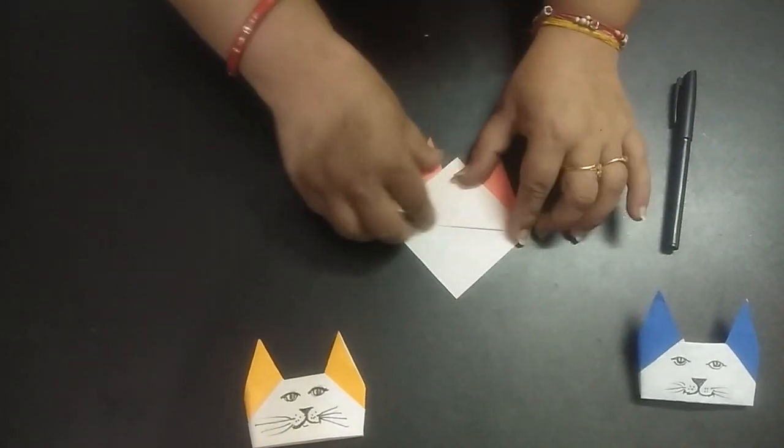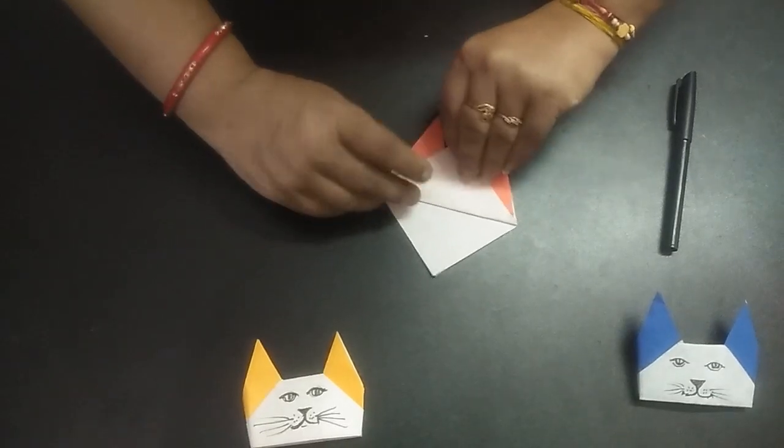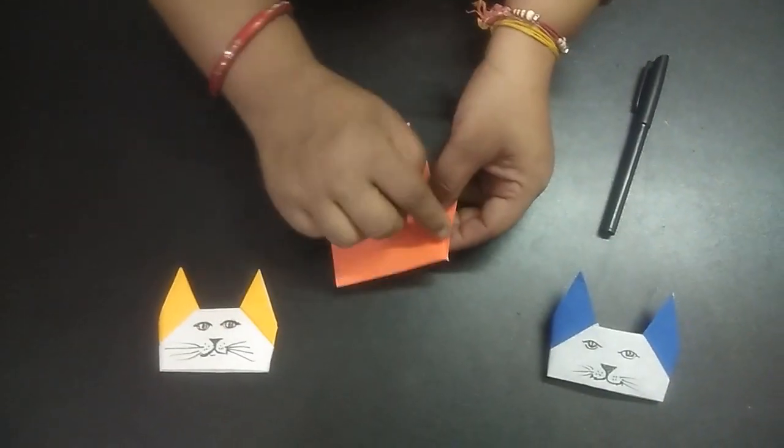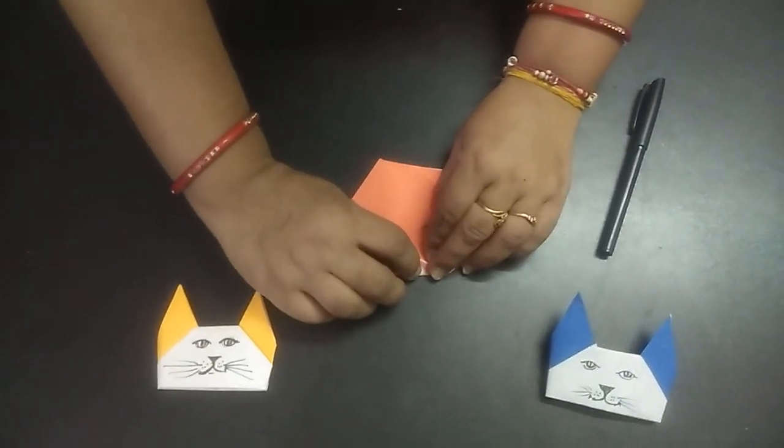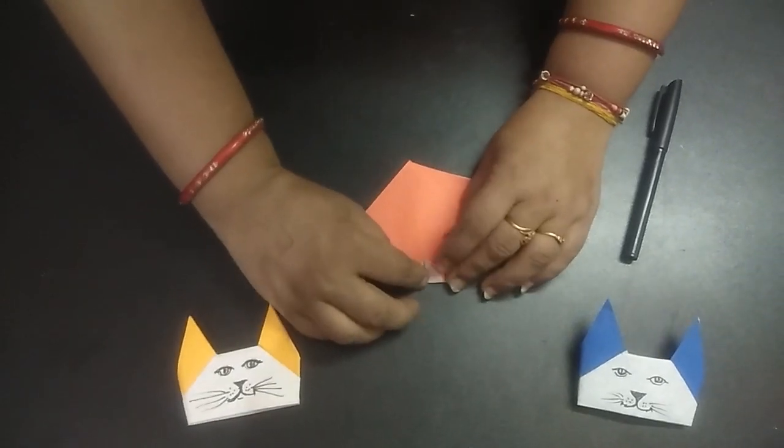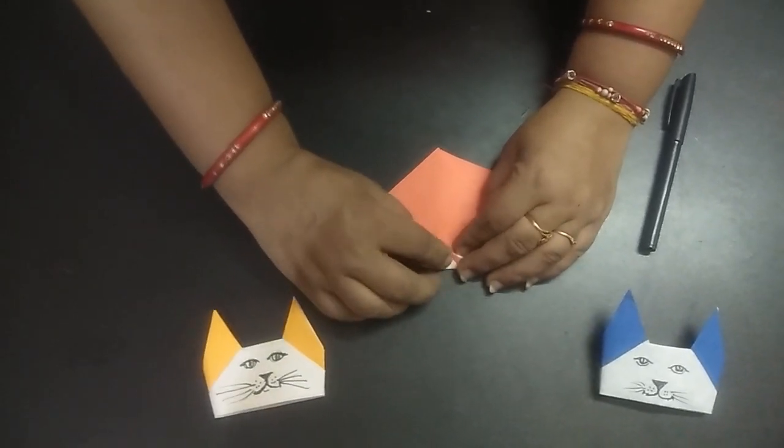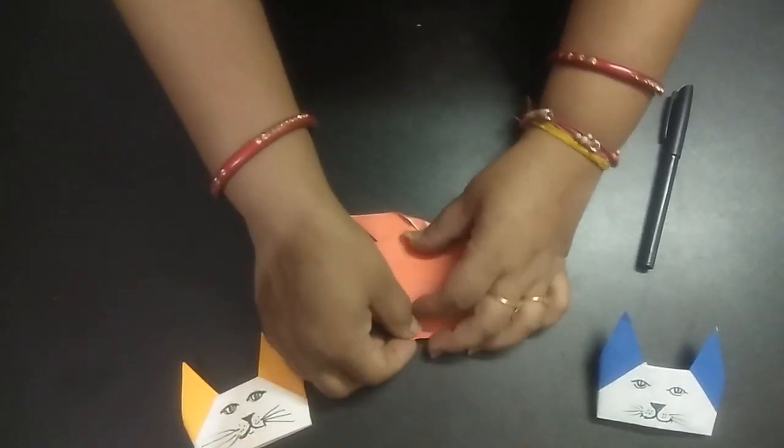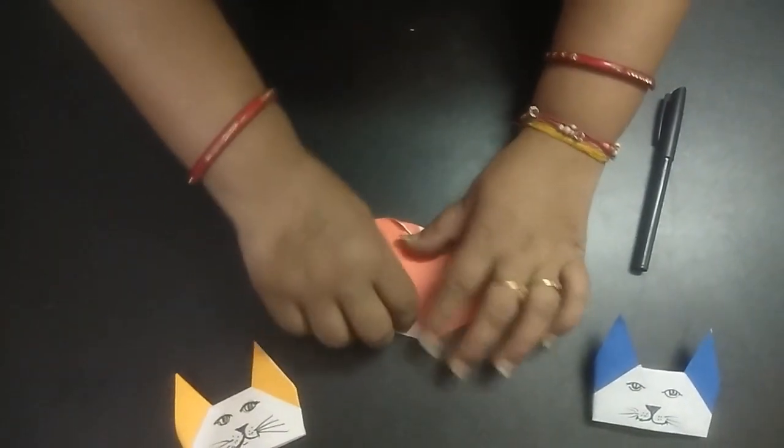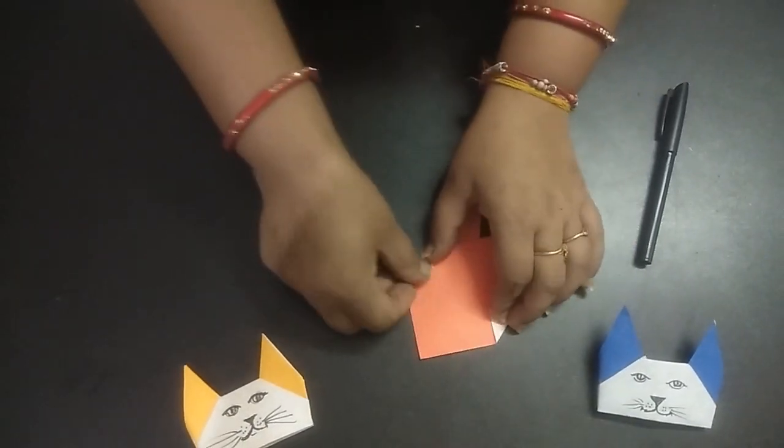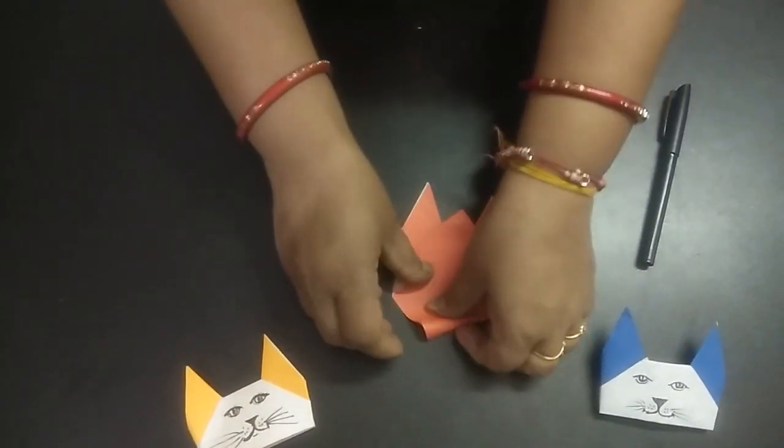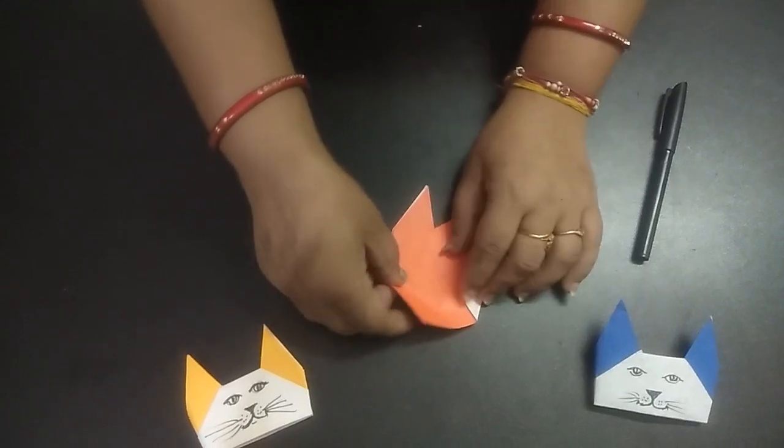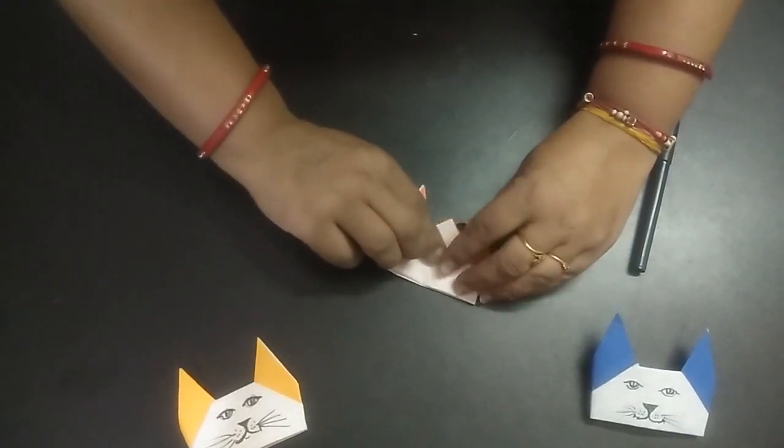Crease it here nicely. Turn your paper this way. Hold this corner and just a little fold here on this line. The other side also, hold this corner and just fold like this.